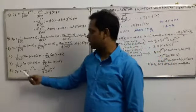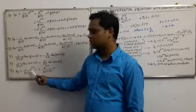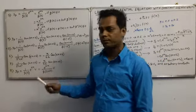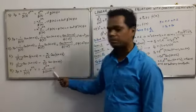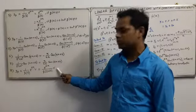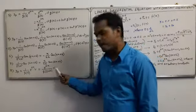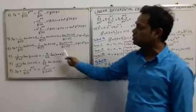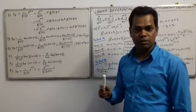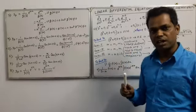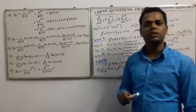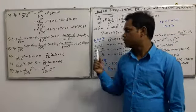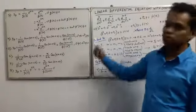In the last formula: yp = 1/g(D) * e^(ax) * v. Here D is replaced by (D + a) acting on v. To find v, we have to use formulas 1 through 7. For the solved examples using those formulas, you can see our next part.